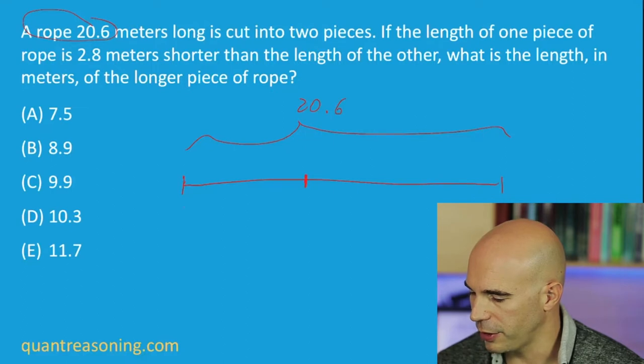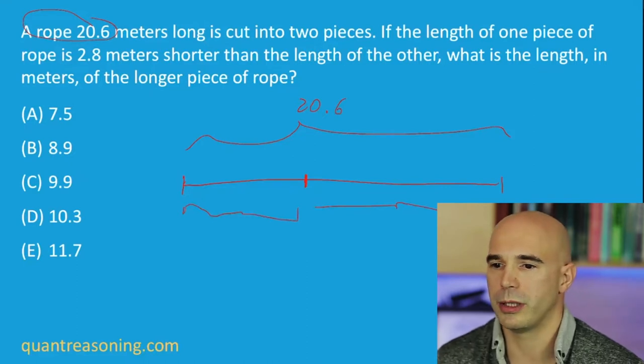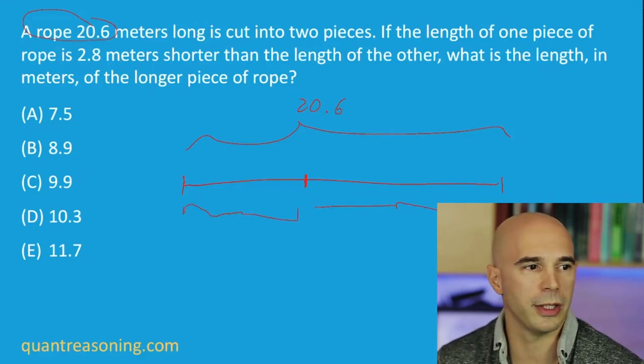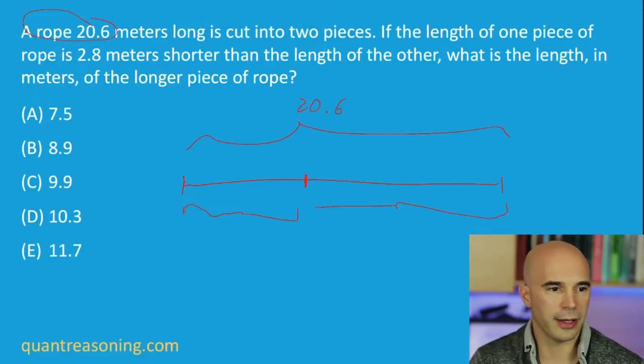So I'm going to put a little tick mark there, and I'll say, I've got some length there, and I've got some other length there, and I know that they sum up to 20.6, but I know that the short one is 2.8 meters shorter than the long one. And so what we can do at that point is say, if the midpoint is right there, that's the midpoint, so you've got 10.3 on each side of that black arrow.